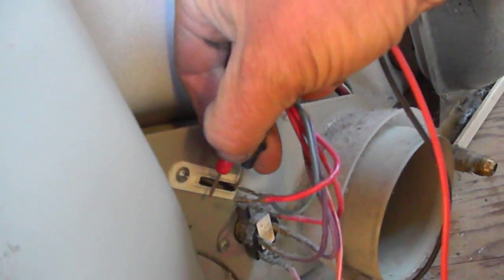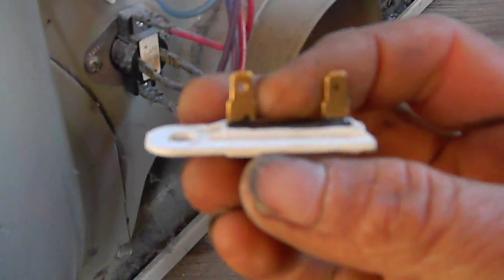Basically, you want to test here for continuity. If you don't get continuity there, and you can see the meter, we don't get any continuity there, then you need a new one. You need a new thermal cutoff. So that's your Kenmore tip for today.